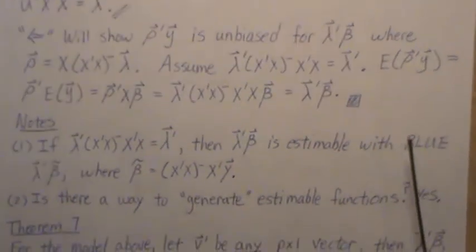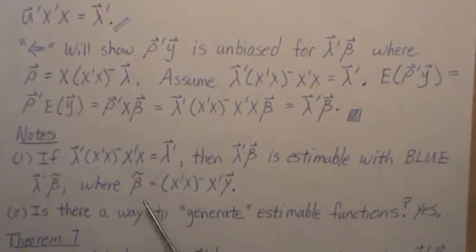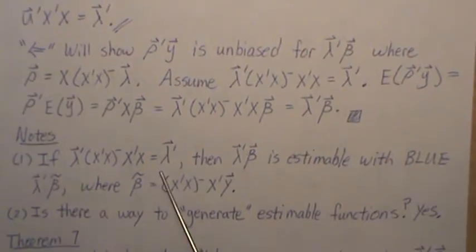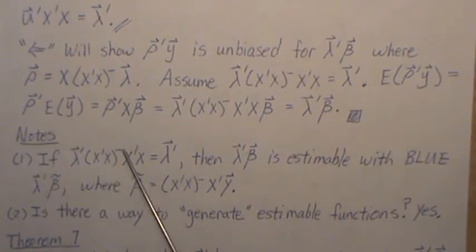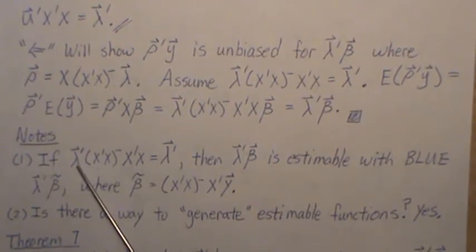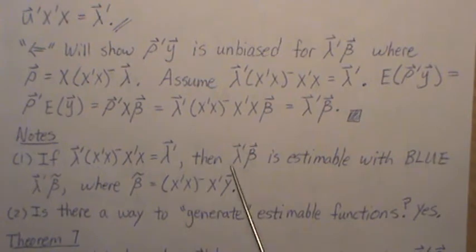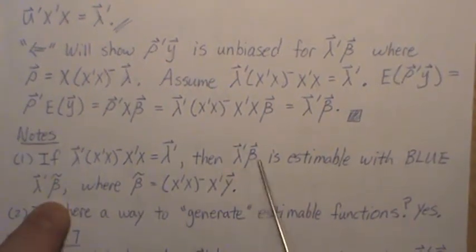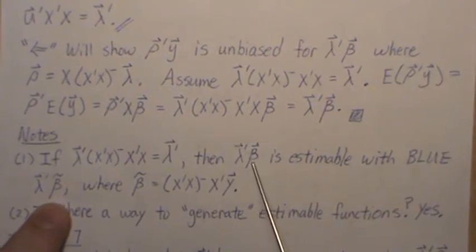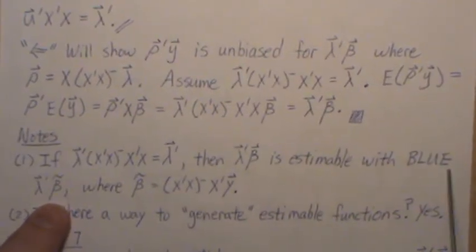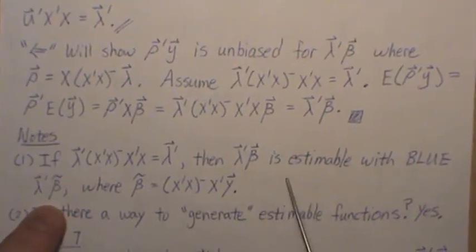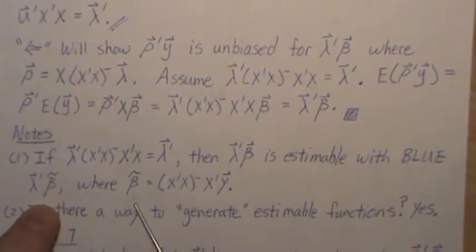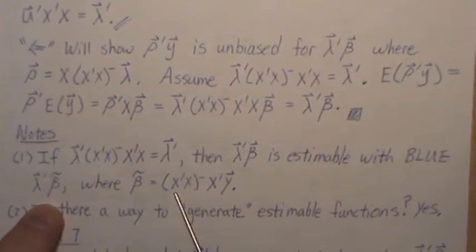Now, a couple notes is if this is true, so we multiply this matrix times lambda and get lambda back, then this is estimable. And since it's estimable, we can plug in the least squares estimate for this and then we have a blue. It's estimable with this blue, where beta tilde is the least squares estimate.